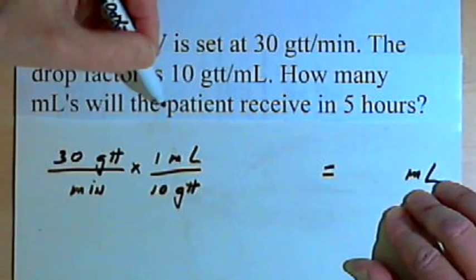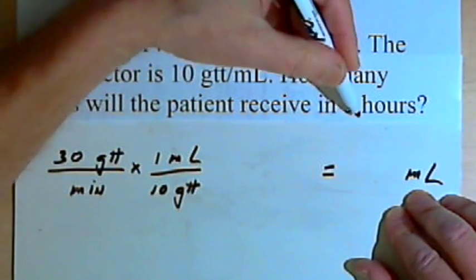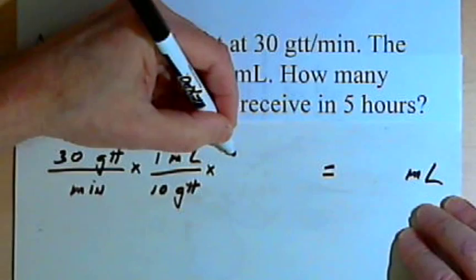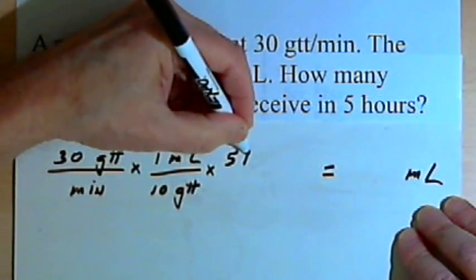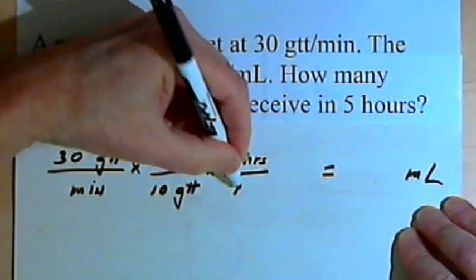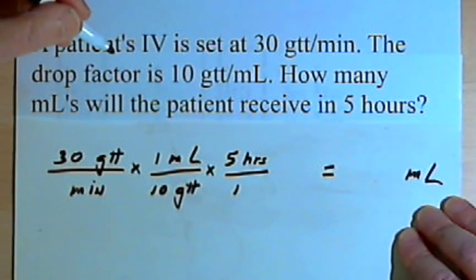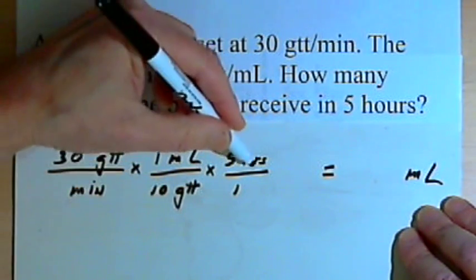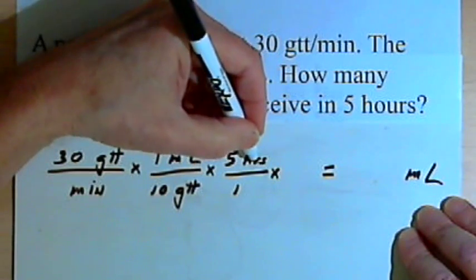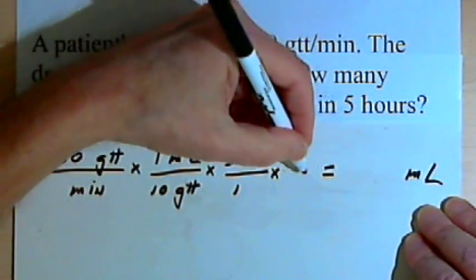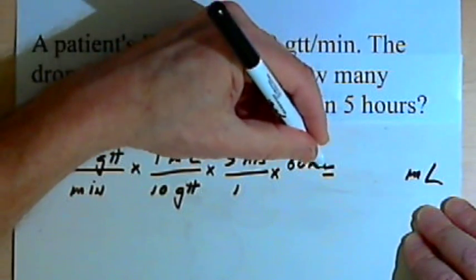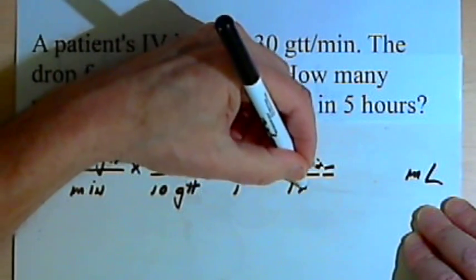I'm also told that the infusion will take five hours, so I've got 5 hours over 1 to keep everything as a fraction. Since I've got minutes and hours, I want to convert the hours into minutes, so I'll use the conversion 60 minutes over 1 hour.